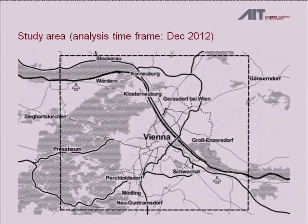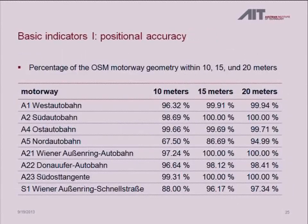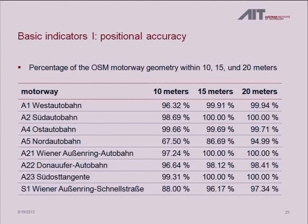Now for the case study for the greater Vienna region, including smaller surrounding towns, looking at December 2012 data. For positional accuracy, we looked at highways in the region and varied the buffer size, like in the British study. You can see the positional accuracy is pretty good — even at only 10 meters from the center line there are few big deviations. Those mostly occur where roads enter the analysis area for very short parts, making it difficult to distinguish ramps and how they are classified, so I wouldn't give too much weight to those values.